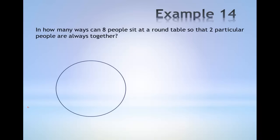Example 14. In how many ways can eight people sit at a round table so that two particular people are always together?